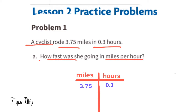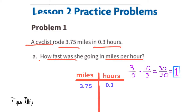The information tells us that the cyclist rode 3 and 75 hundredths miles in three-tenths of an hour. We need to turn the three-tenths of an hour into one full hour. Think of 0.3 as the fraction three-tenths. We can multiply three-tenths times ten-thirds.